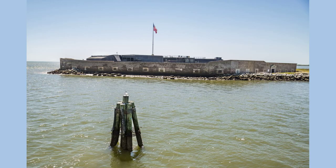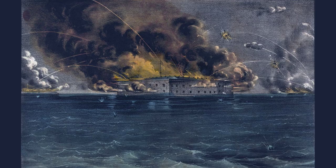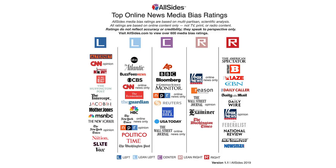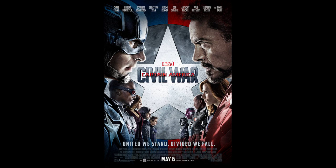The Fort Sumter Crisis. In April 1861, tensions between the North and the South came to a head when Confederate forces attacked Fort Sumter. The attack sparked outrage in the North and led to Lincoln's call for troops to put down the rebellion.